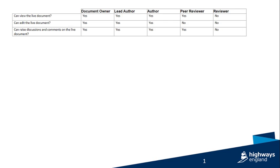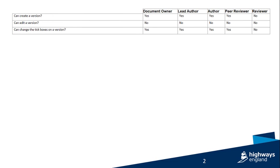In CARS, you can create a version of a document, which is a read-only snapshot of a document at that time. Versions can be created by the Document Owner, Lead Author, Author, and Peer Reviewer. No users can edit a version — all versions are read-only.